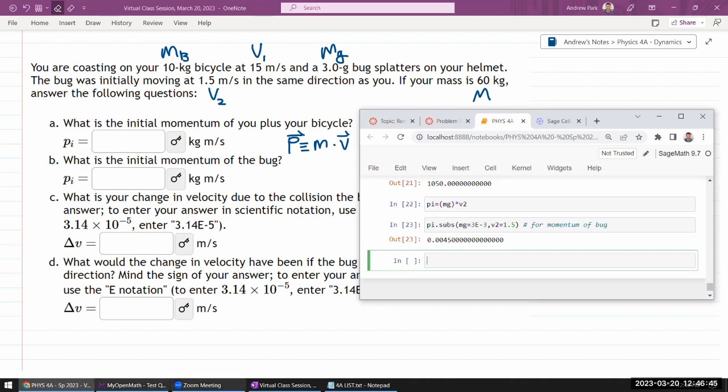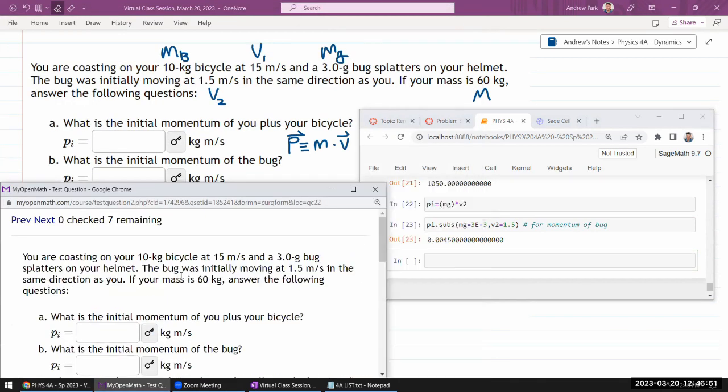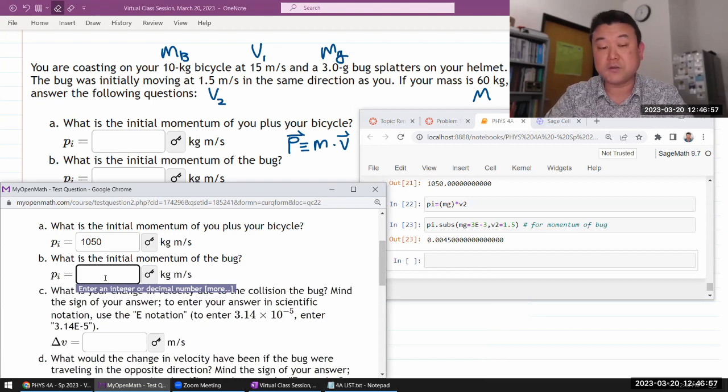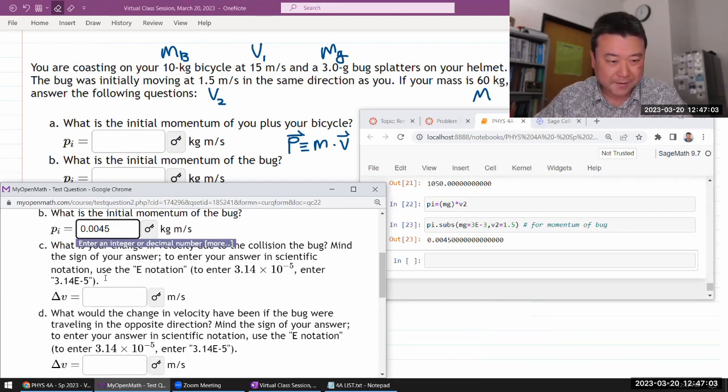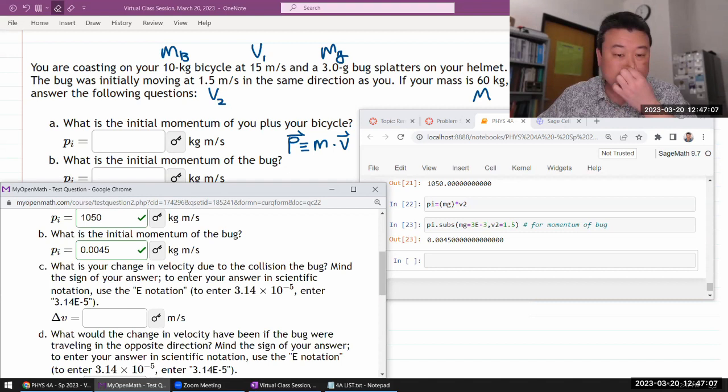Let's make sure we got these two right. Because if I got these two wrong, then the rest won't make sense. So, initial momentum of me plus bicycle, 1050, sorry, 1050 kilogram meter per second. Moment of the bug. I guess, let me just do it the easy way. Not to have to convert it to scientific notation. All right, that looks good.